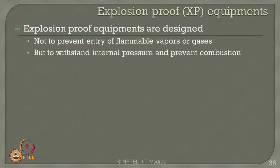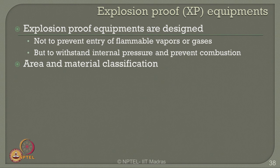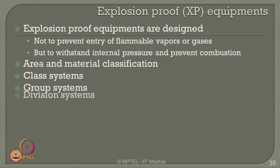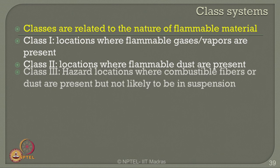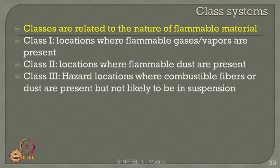One can also use explosion-proof equipment, rated as XP equipment. Explosion-proof equipment is designed not to prevent entry of flammable vapors or gases, but to withstand internal pressure and prevent combustion from these interactions. Area and material classification can be done as explosion-proof. Class systems are related to the nature of flammable material: Class 1 refers to locations where flammable gases and vapors are present, Class 2 where flammable dust is present, and Class 3 where combustible fibers or dust are present but not likely in suspension.